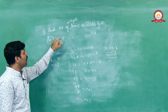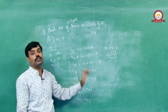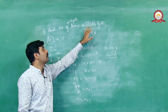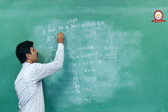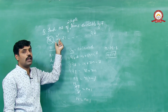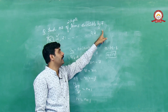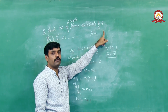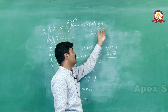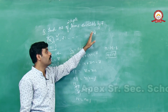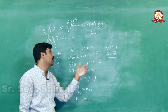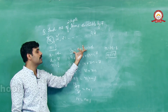Question ध्यान से पढ़ना है — 2-digit terms divisible by 7 पूछा गया था। इसलिए 7 को ignore किया (single digit है)। First 2-digit number divisible by 7 = 14, last = 98। General term formula AN use करके N = 13 calculate किया।